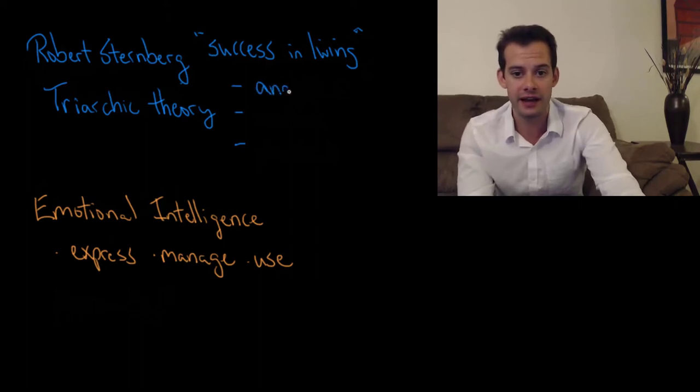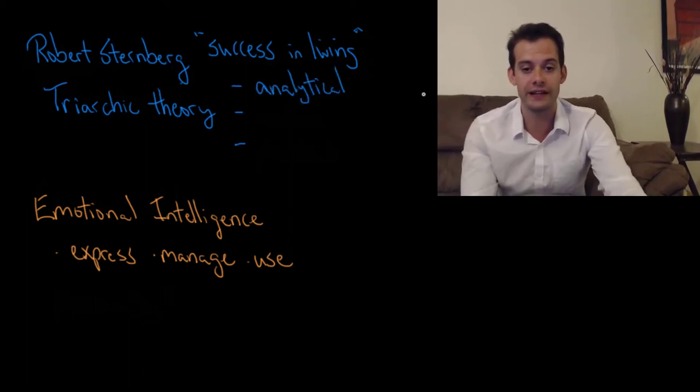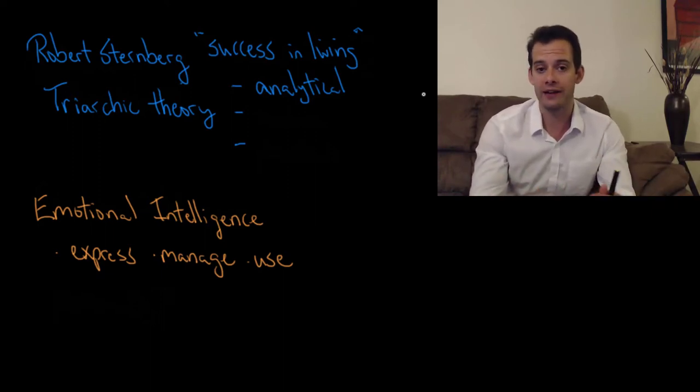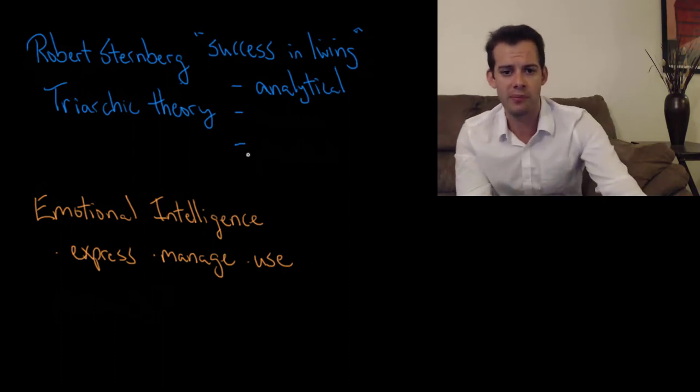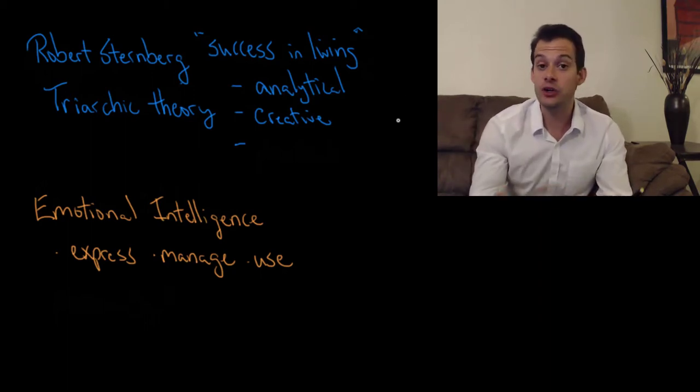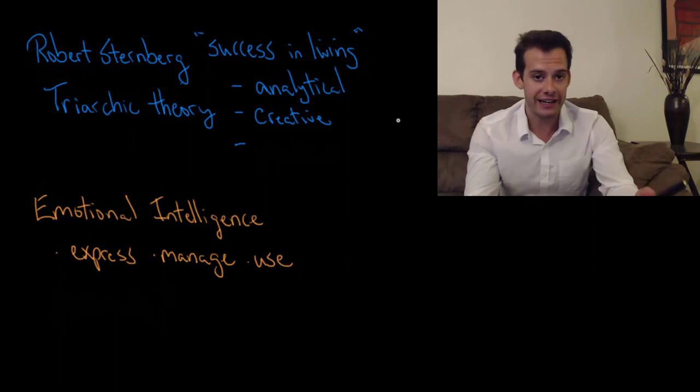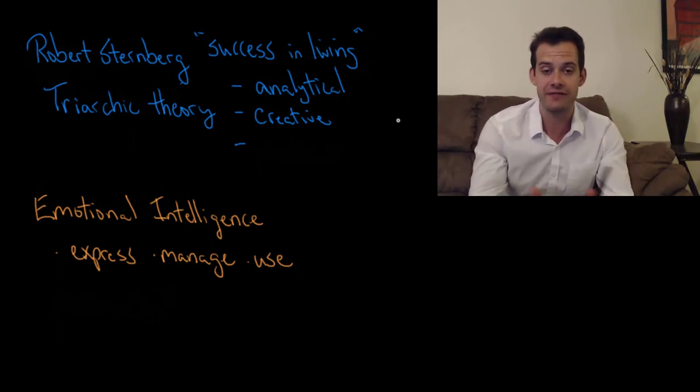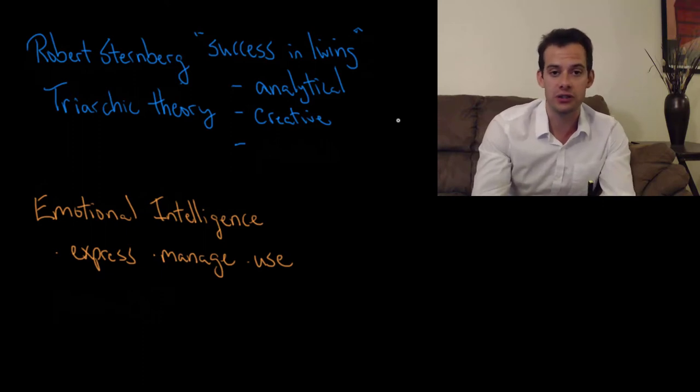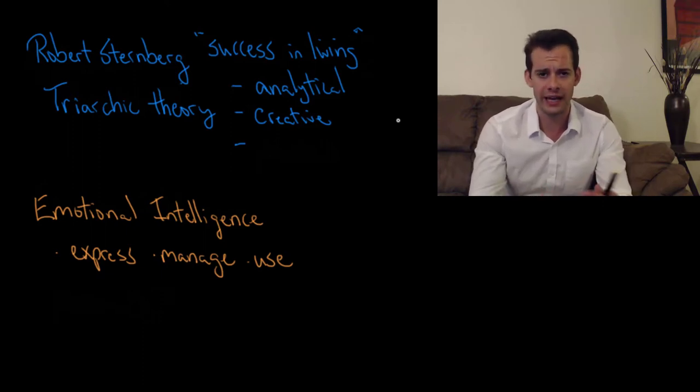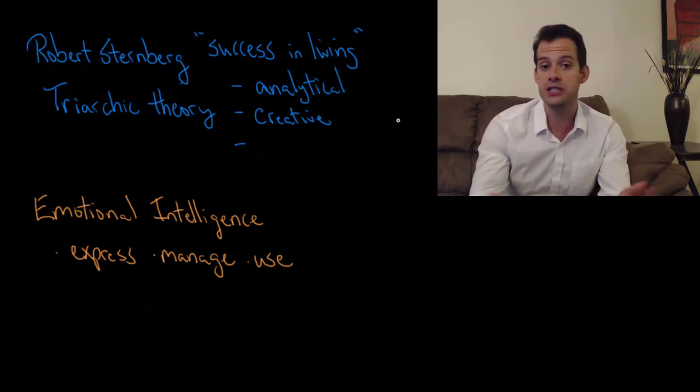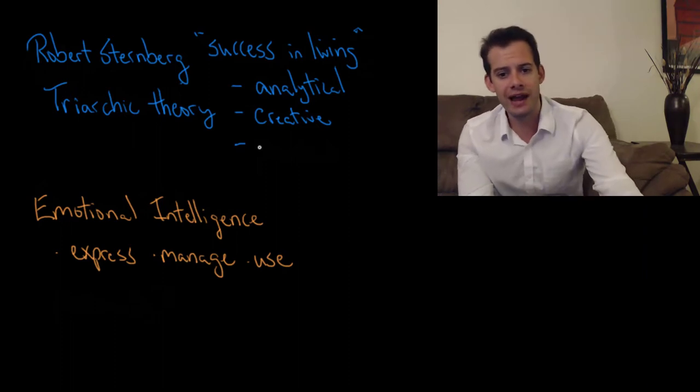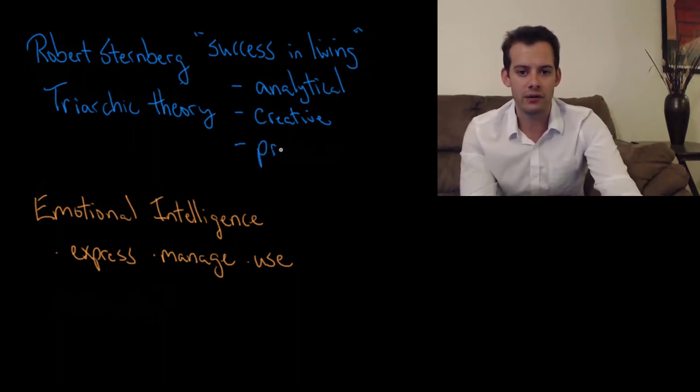The first part is familiar. It's the idea of analytical intelligence. This is the traditional problem solving way of thinking about intelligence. But Sternberg suggests that that's not all there is to intelligence. He's also proposed the next part which is creative intelligence. This would be the ability to generate new solutions that haven't been used before. Rather than just finding the answers to problems that have specific defined answers. It's coming up with new solutions to new problems. This would relate to the idea of divergent thinking that I talked about in a previous video. The ability to generate new uses for some object.